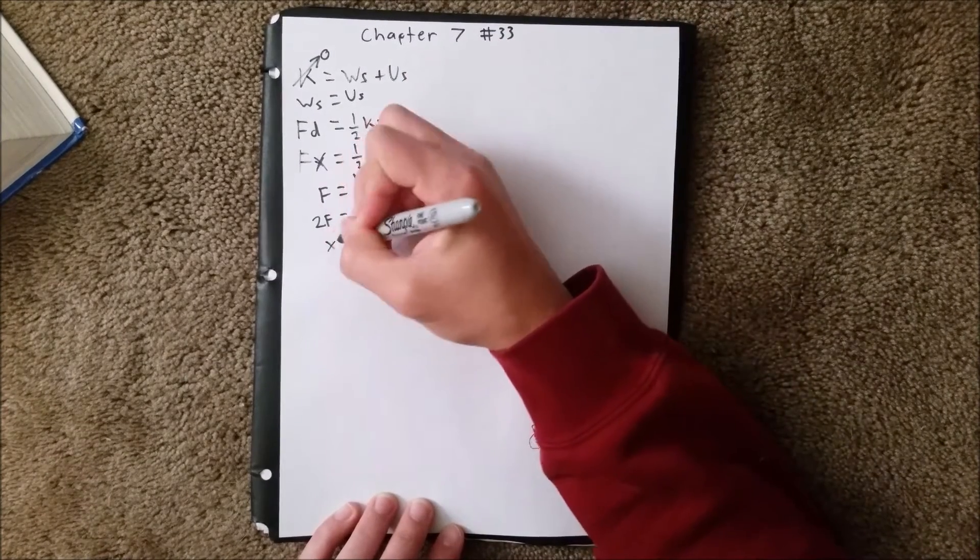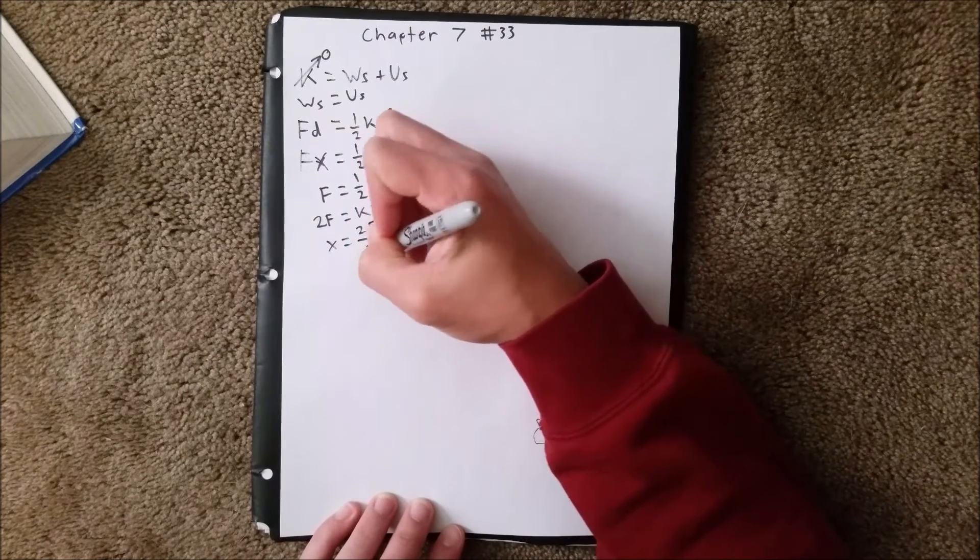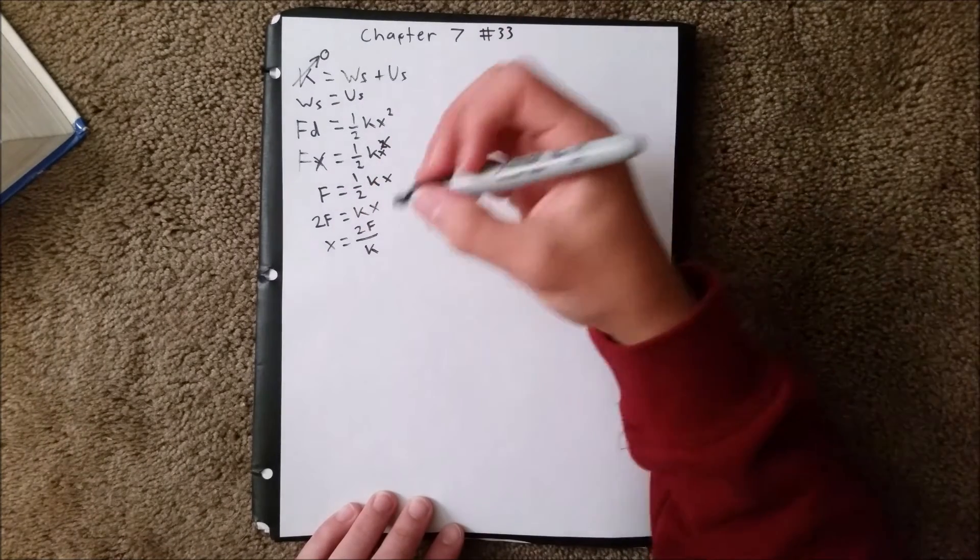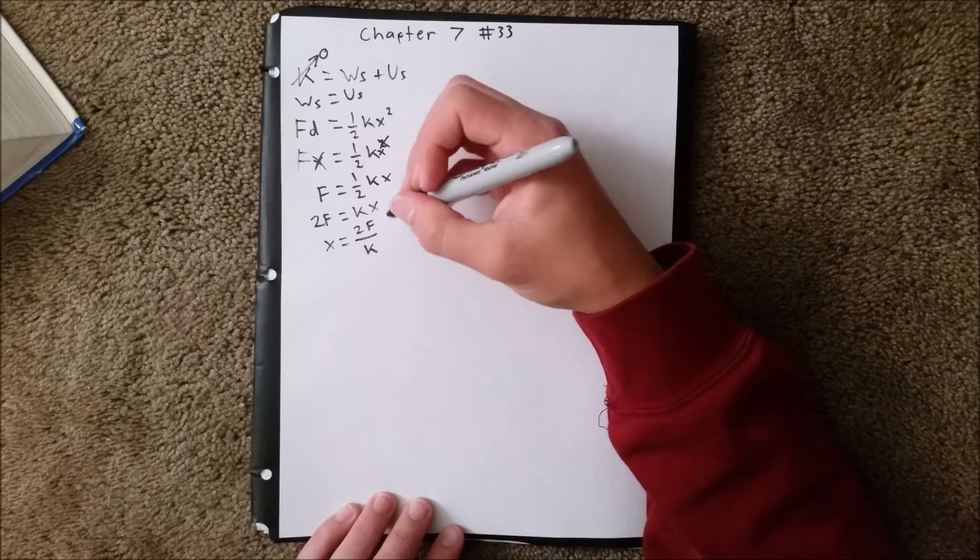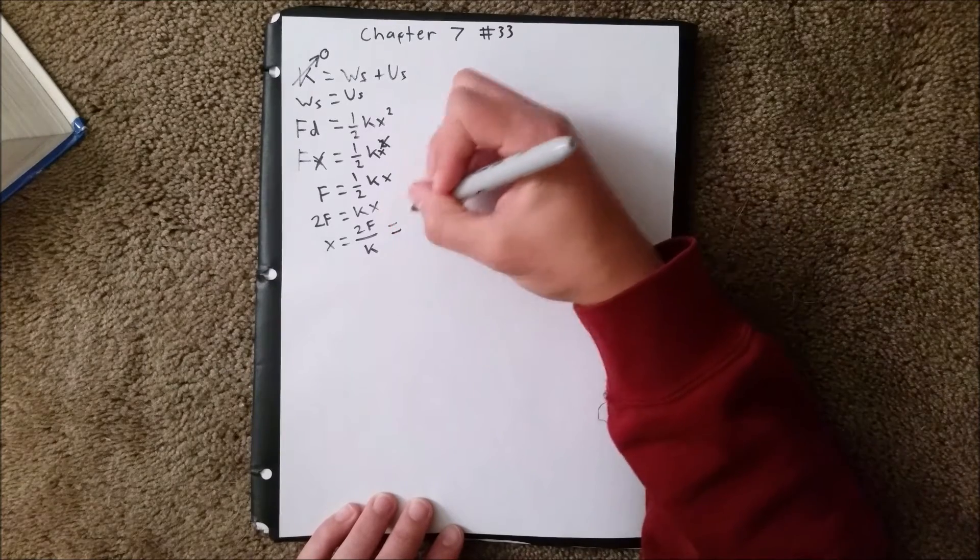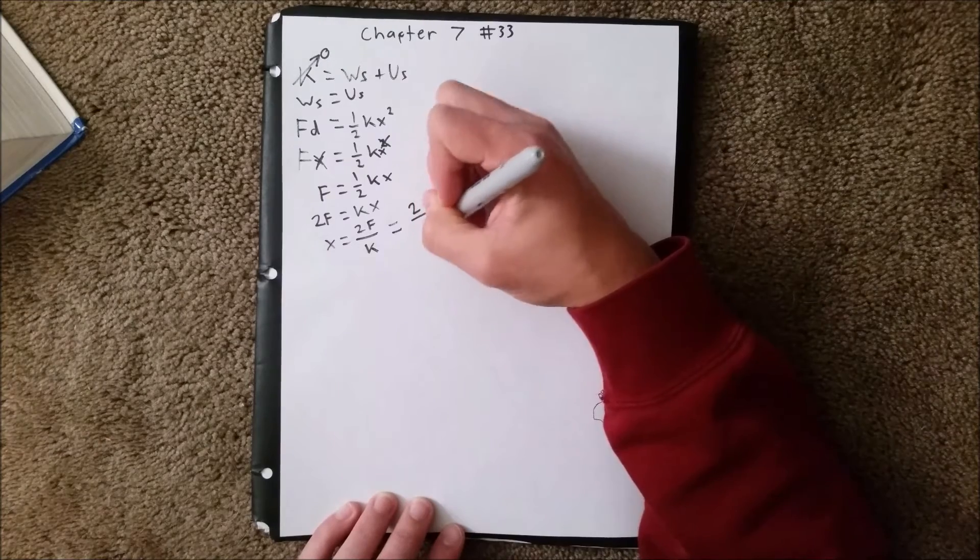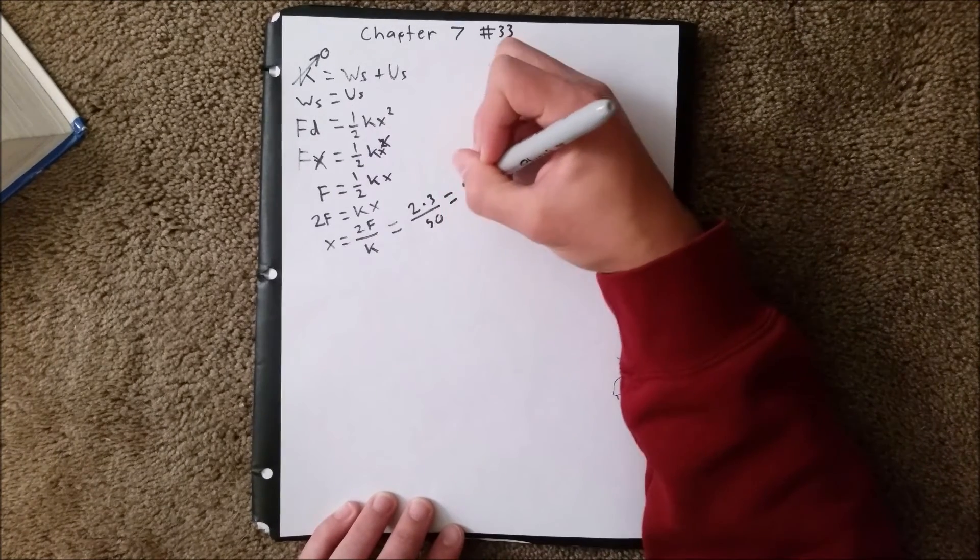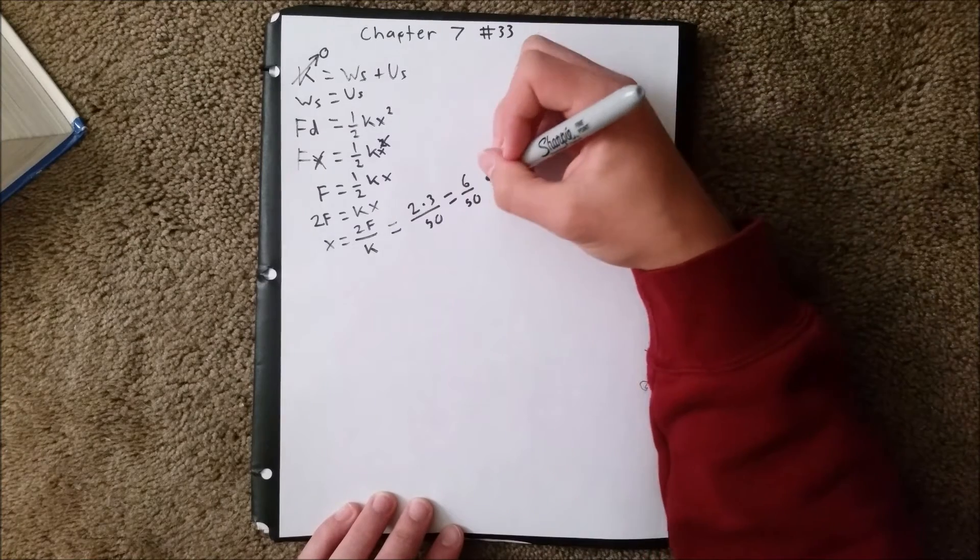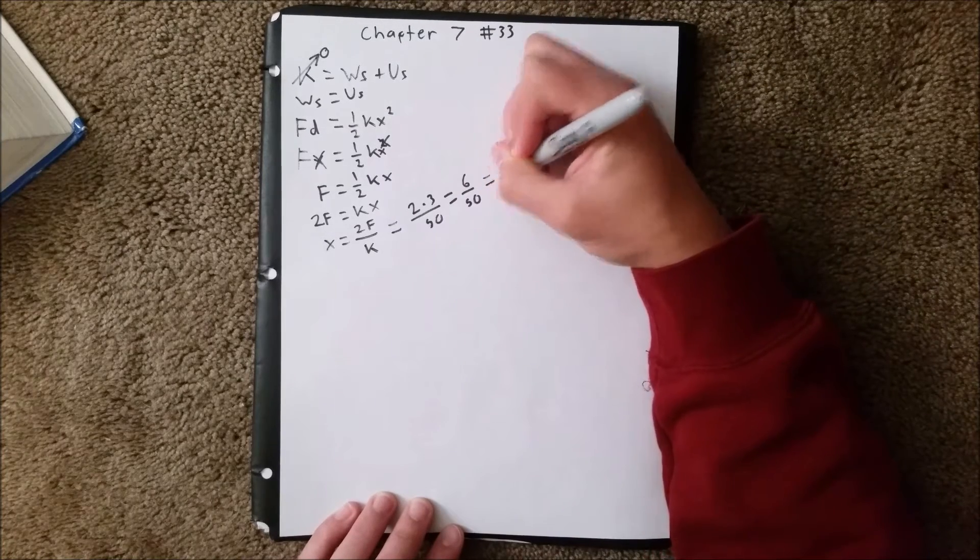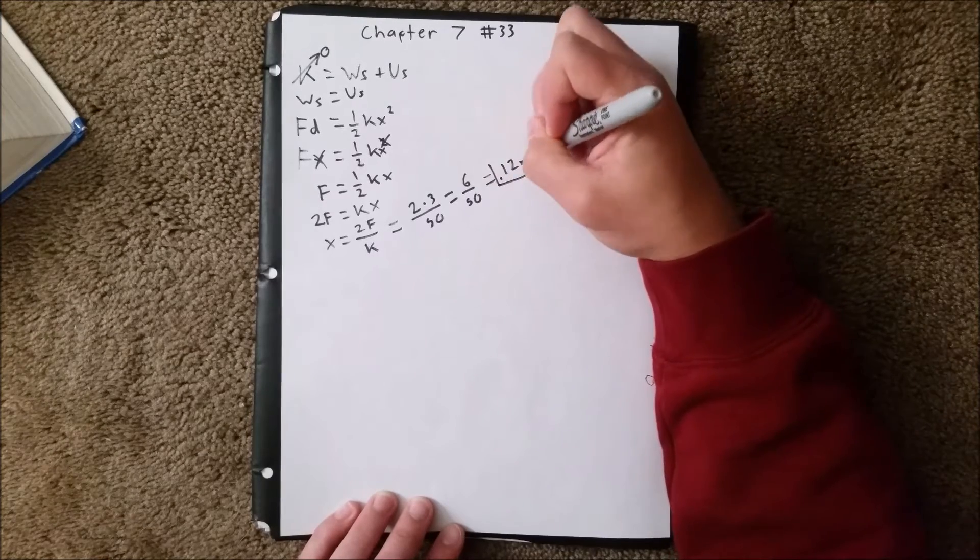We can solve for x, where x equals 2f over k. We know these values from the problem, where f is equal to 3 and k is equal to 50. So we can rewrite this as 2 times 3 over 50, which equals 6 over 50. When you plug that into your calculator, you will get 0.12 meters. That will be the answer to part A.